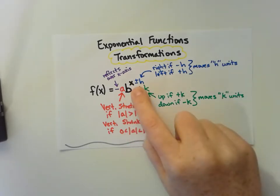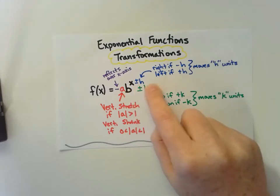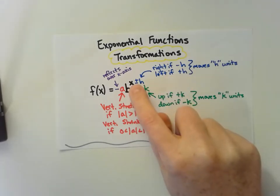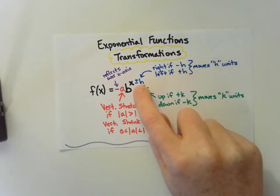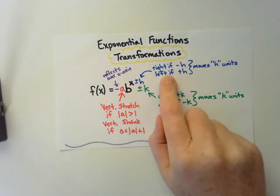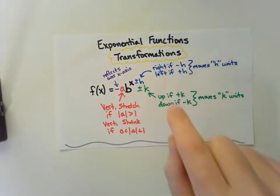If in our exponent we have a number added to the variable, like x + 2 for example, it makes it go to the left that many units. If it was x - 2, it would go to the right that many units. In an exponential function, our exponent is where something is grouped together, and remember it's the opposite of what we think. Positive goes left and negative goes right.